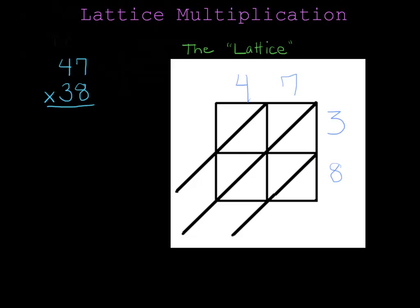Lattice multiplication works a little bit like a times table. For example, this box is where the four meets the three. So in this box, I will put the answer to four times three. Four times three is twelve, and I write the twelve like this.